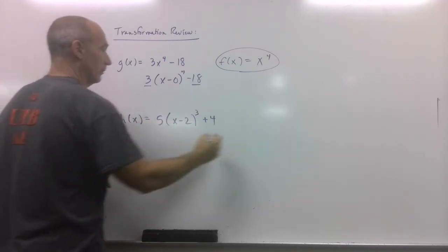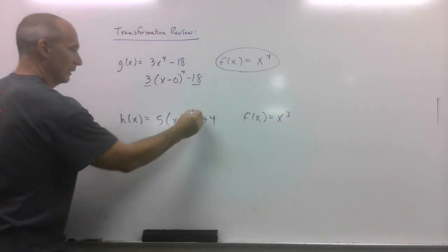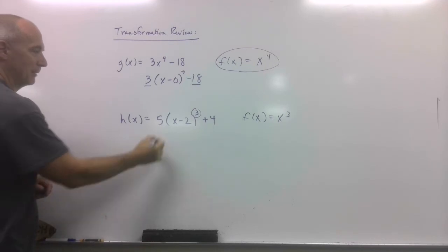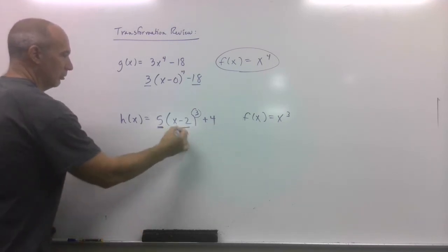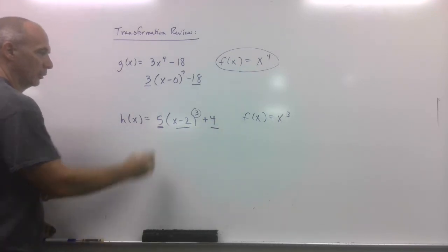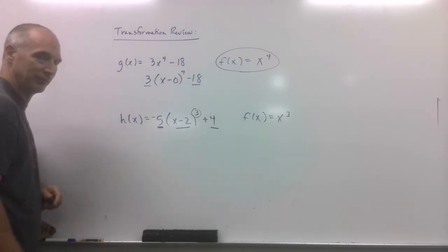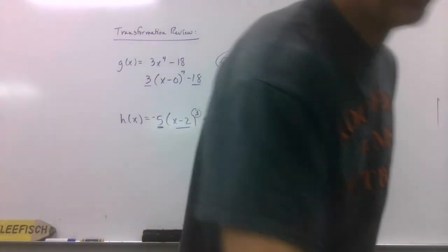This one, what's the parent function? Well, that would be f of x equals a cubic function, so you can see that. So, what happens? Vertical stretch five, right two, up four. All right. What if this was negative? That would be over the x. Just throwing that in for free. So, a lot of review on the final section.